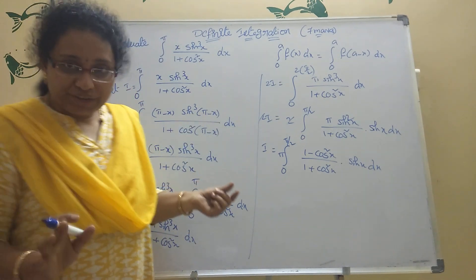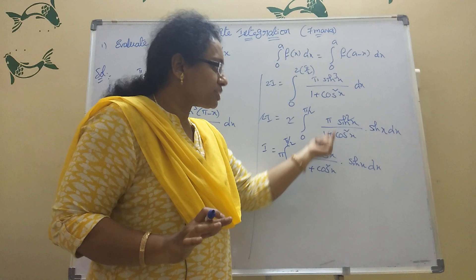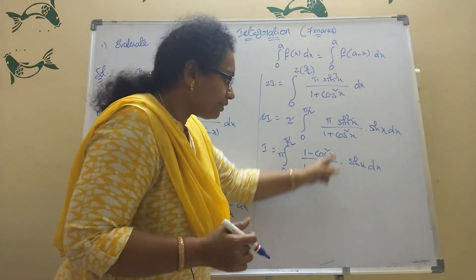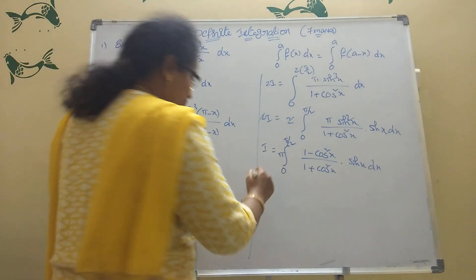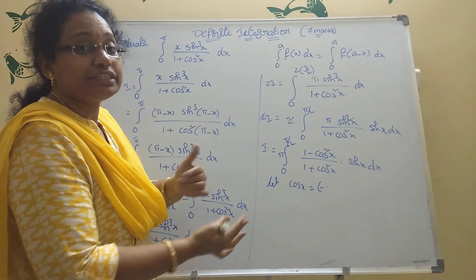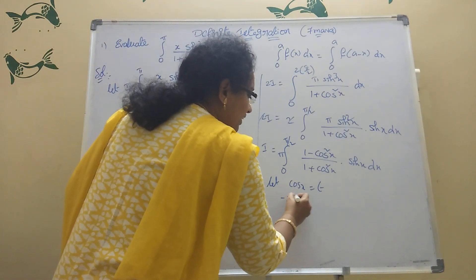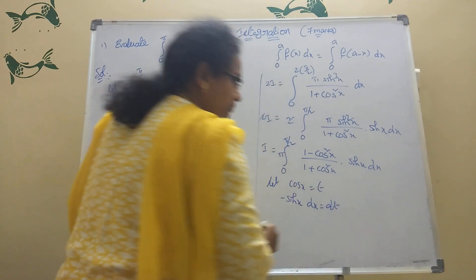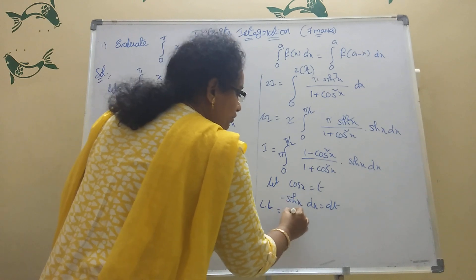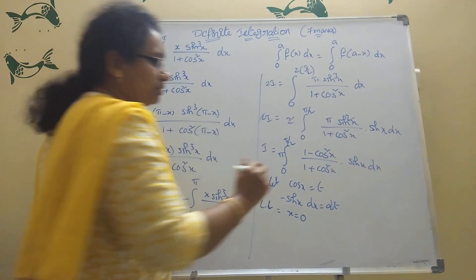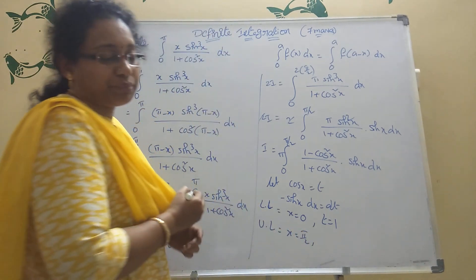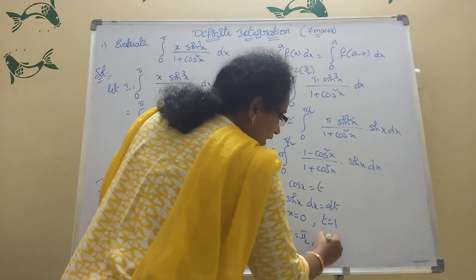Now take the substitution: let cos x = t, so −sin x dx = dt. Change the limits: when x = 0, cos 0 = 1 so t = 1; when x = π/2, cos(π/2) = 0 so t = 0. Apply this to the function: I = π × integration from 1 to 0 of (1 − t²)/(1 + t²) × (−dt).